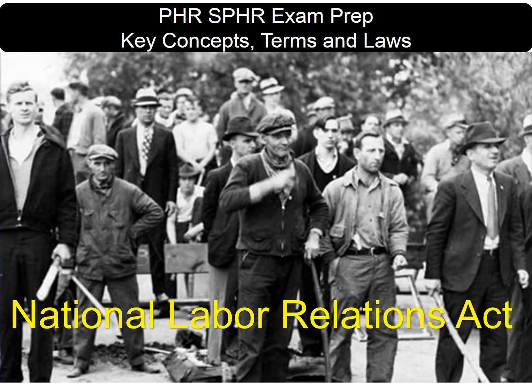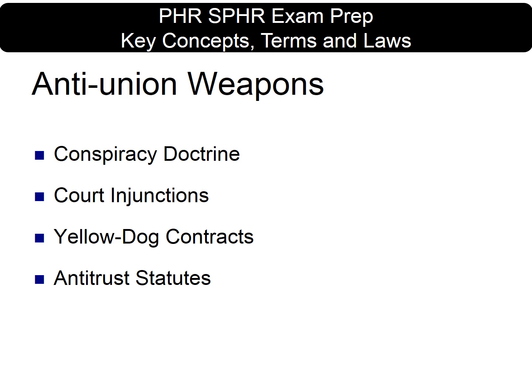During the 1800s, four major tactics were used against unions: conspiracy doctrine, court injunctions, yellow dog contracts, and antitrust statutes were the four major weapons used against labor unions.